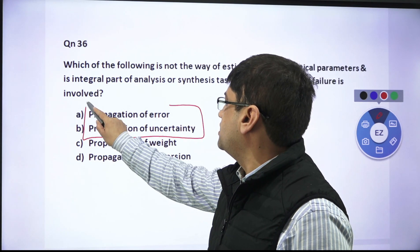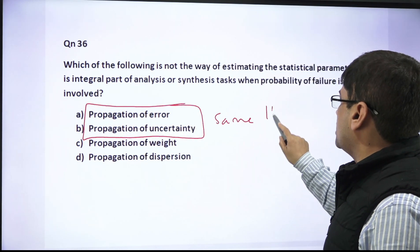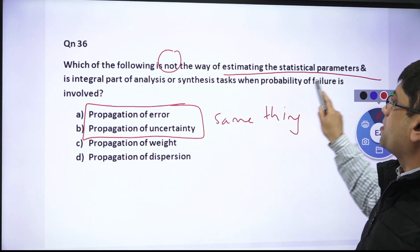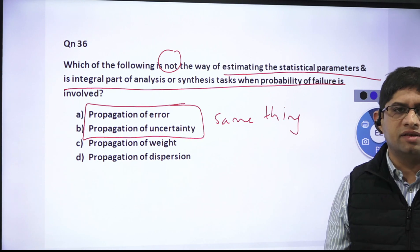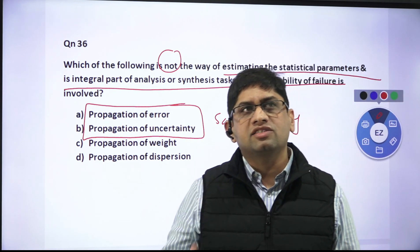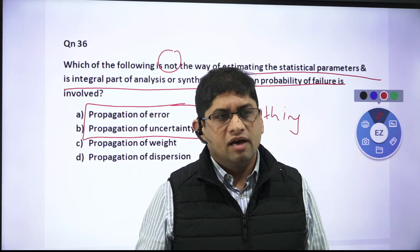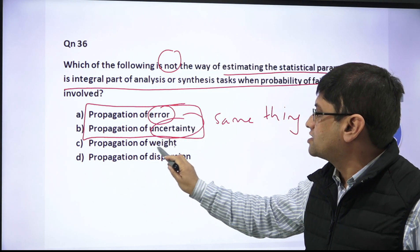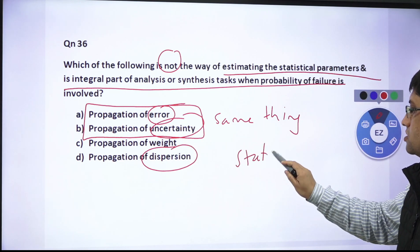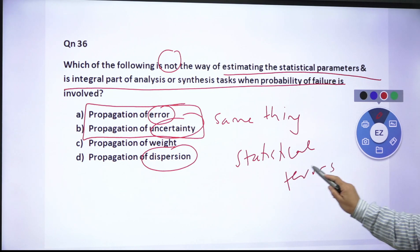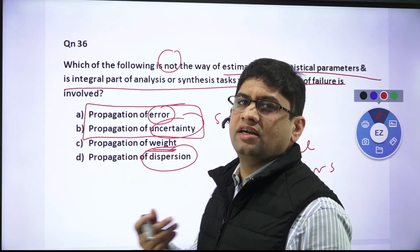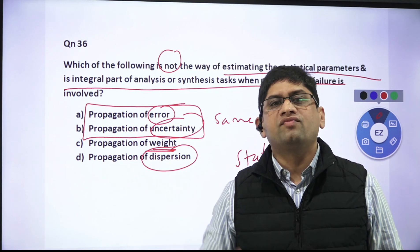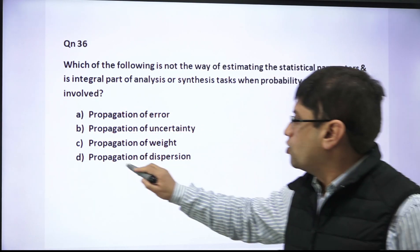After elimination, propagation of error and propagation of uncertainty are essentially the same thing. The question asks which is NOT a way of estimating the statistical parameter. Error, uncertainty, and dispersion are all statistical terms — they are something you measure as a percentage or variation. But weight is not a statistical term in this context.